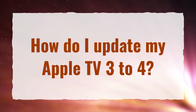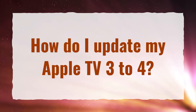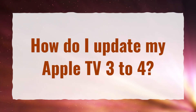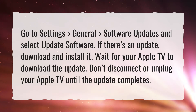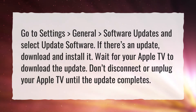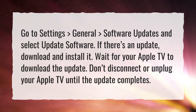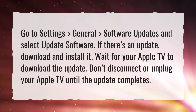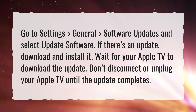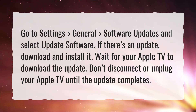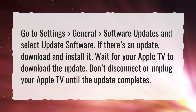How do I update my Apple TV 3? Go to Settings, General, Software Updates and select Update Software. If there's an update, download and install it. Wait for your Apple TV to download the update, and don't disconnect or unplug your Apple TV until the update completes.